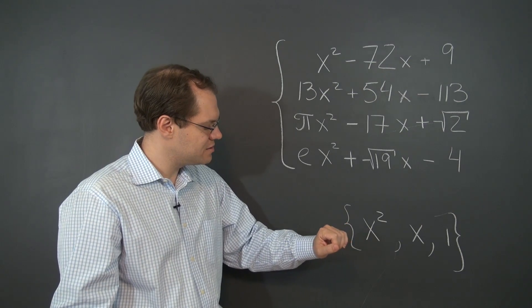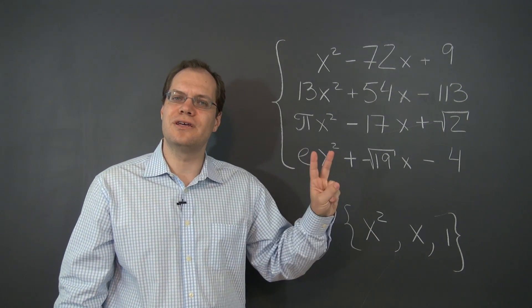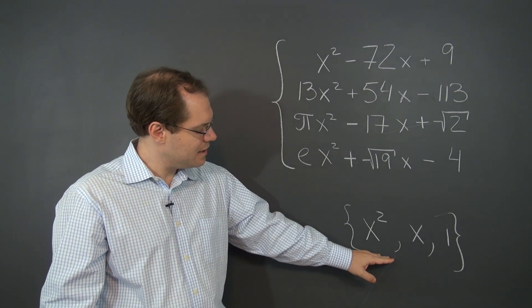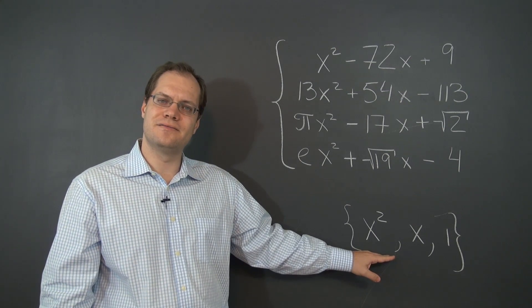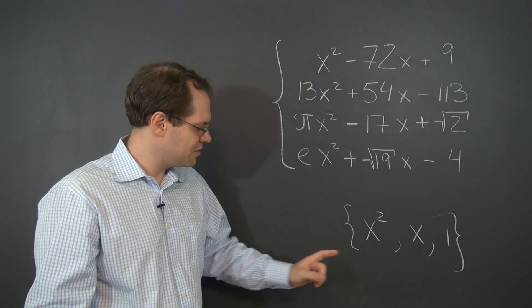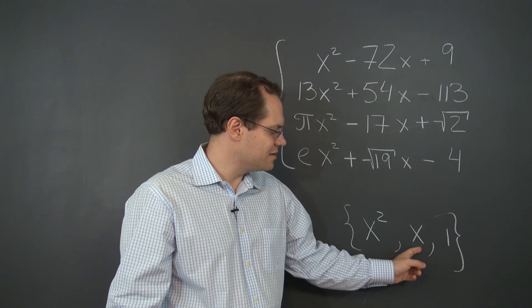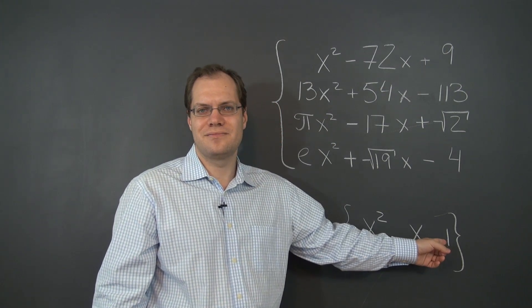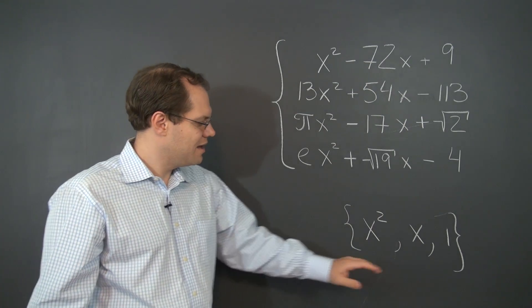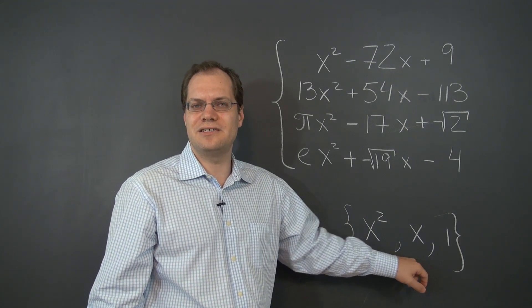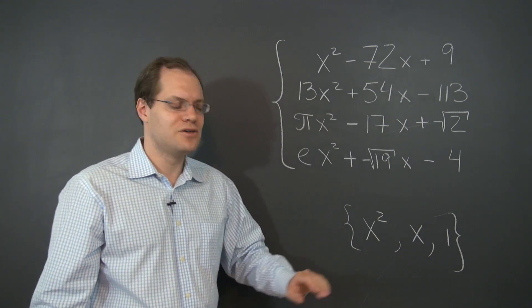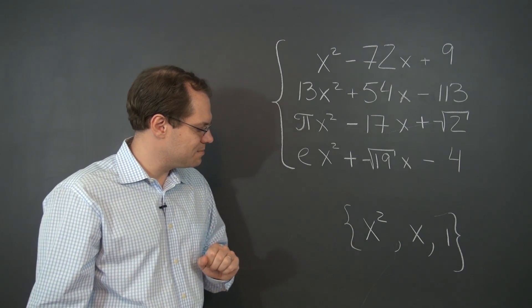Now, how do I know this is a basis? Well, I have to show two things. Number one, that these polynomials are linearly independent. And I think it's clear that they are. Because x squared cannot be a linear combination of x and 1. Because where is x squared going to come from? And so forth. X cannot be a linear combination of the other two and neither can 1. So yes, this set is linearly independent.